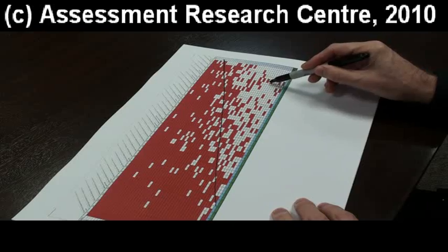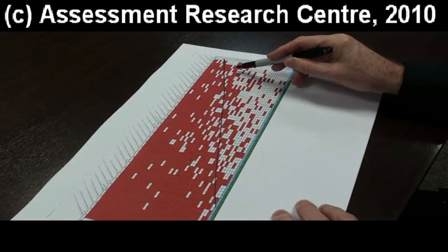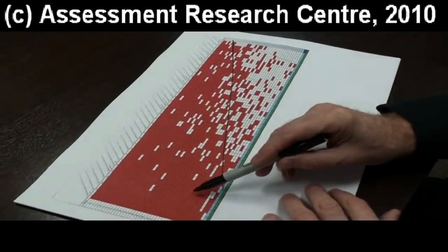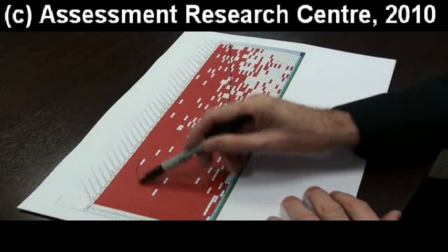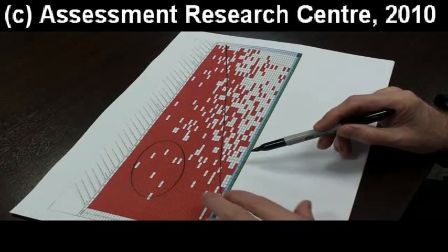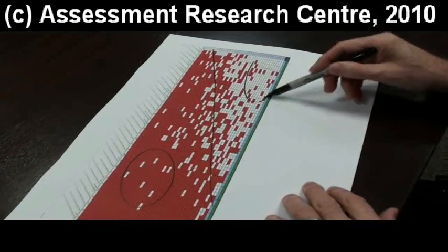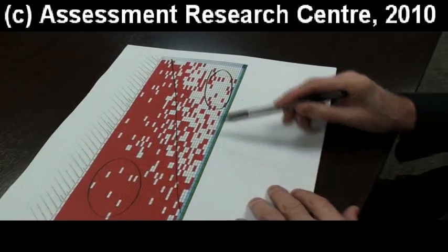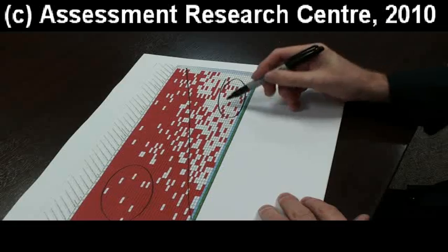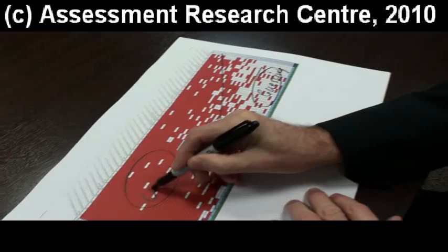Now also we can see that these items over to the right are the more difficult items because fewer students get them correct and these are the easy items because most students get them correct. So we need to wonder about these questions in here, why would they be incorrect when they're so easy and we need also to wonder about these ones over here. Why would they be correct when they're so difficult? This may be guessing and this may be careless.